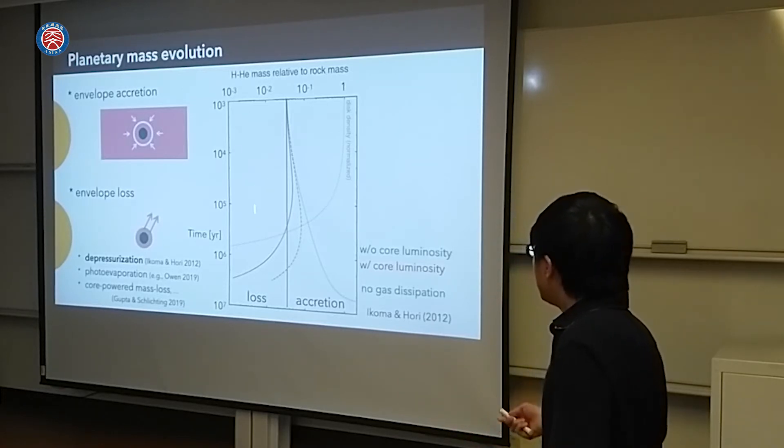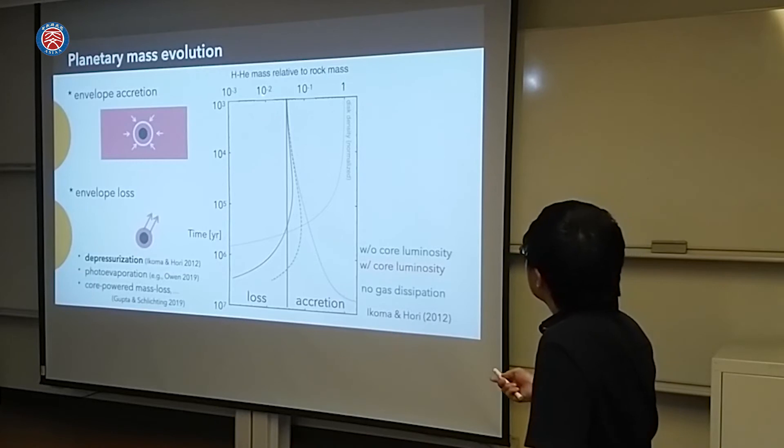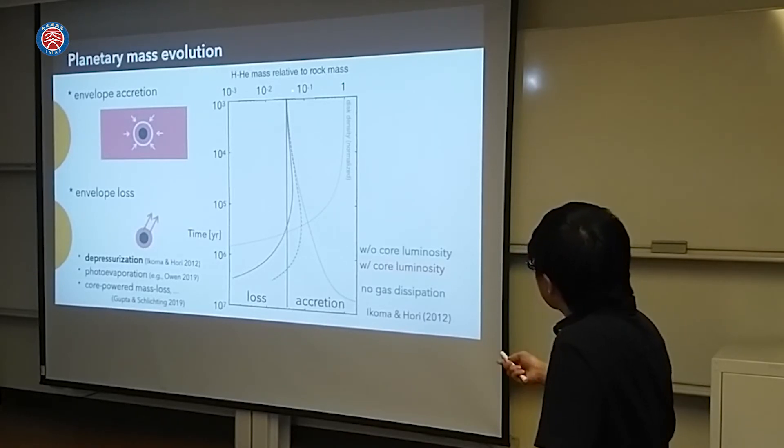This gas is accreted by the planets as their envelopes. This figure shows the envelopes. This is the envelope fraction to the rocky core. Such envelope fraction, time variations, these envelope fractions. Here, this density is also part of it. In gas disk, planets build envelopes. This light panel, light-hand side is operation.